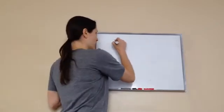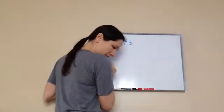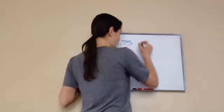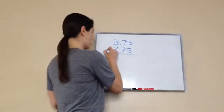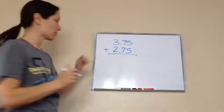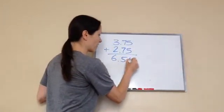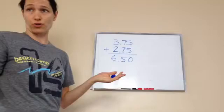They told us to add 3.75 and 2.75 and sum, which means the answer to an adding problem, is going to give us 6.50. So, they're just going to go on and give us the answer.